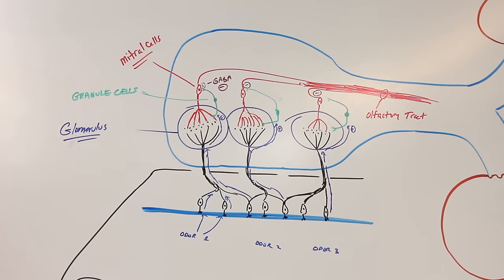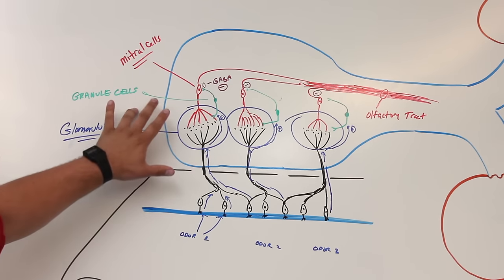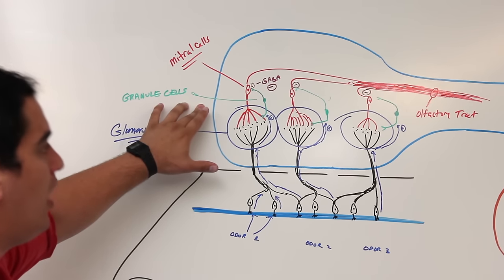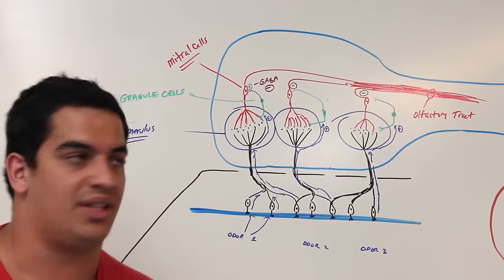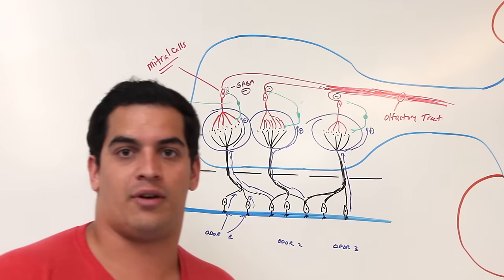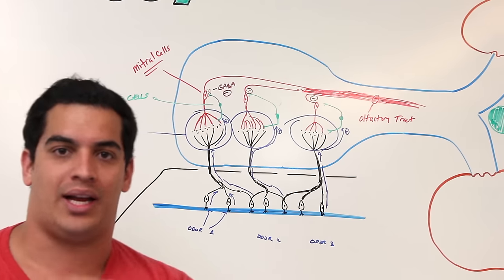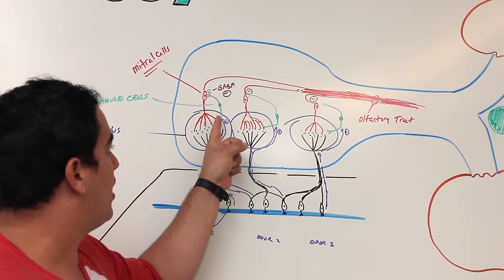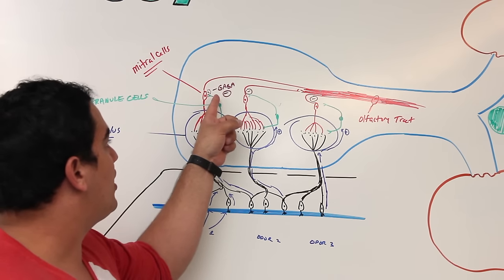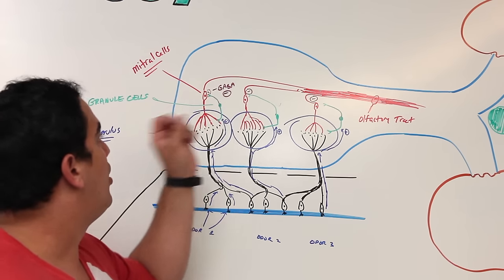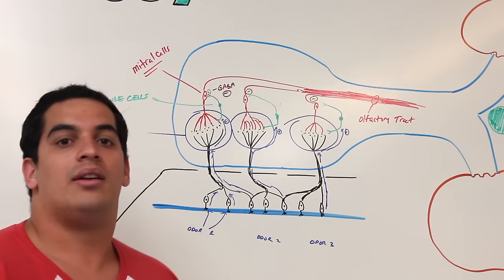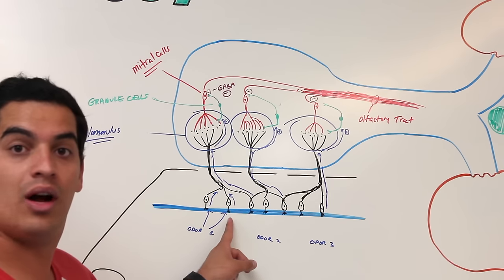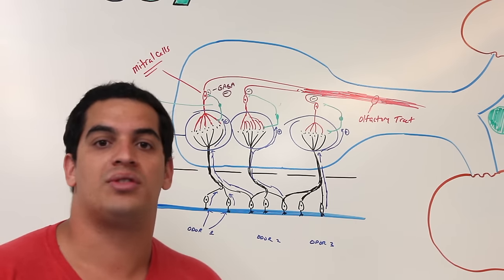Here's why this is happening: these granule cells are basically going to only allow the most excitatory impulses to go to the actual central nervous system. So the function of the amacrine-like granule cells is that they're stimulated by the mitral cells and release GABAergic materials onto mitral cells to inhibit them, ensuring that only the most excitatory impulses from the olfactory neurons reach the cerebral cortex.